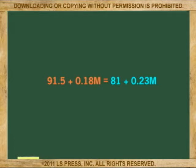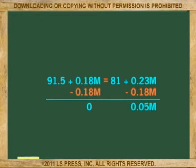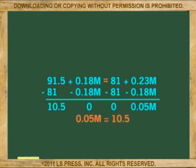Solving for M, we subtract 18 cents from both sides and also subtract $81 from both sides, giving us 0.05M equals 10.50.